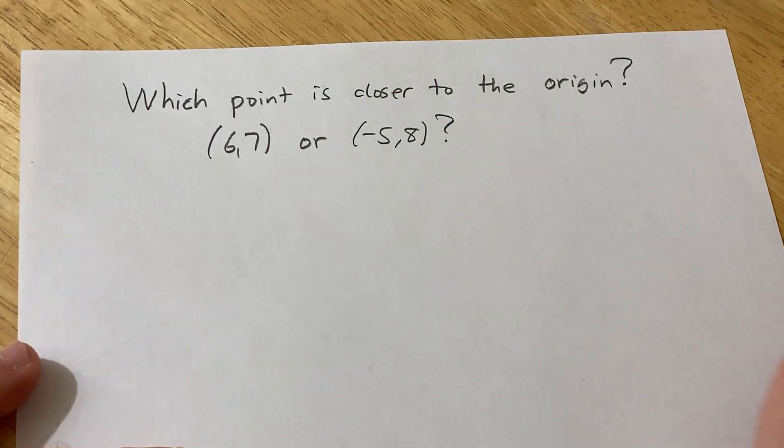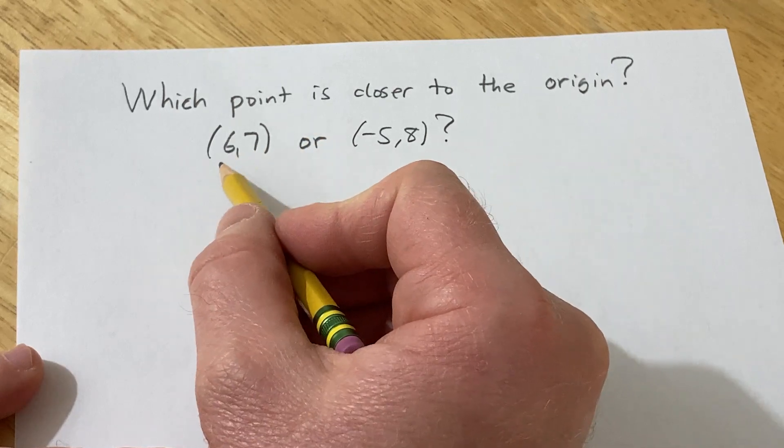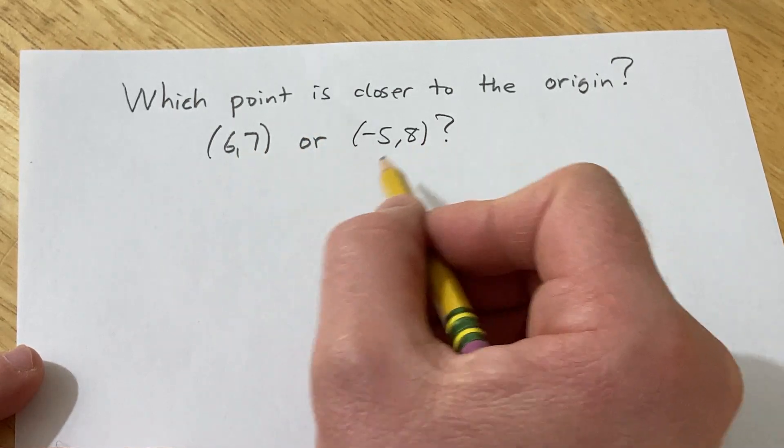Hello, in this video we're going to answer this question. Which point is closer to the origin? We have two points, 6 comma 7 and negative 5 comma 8.